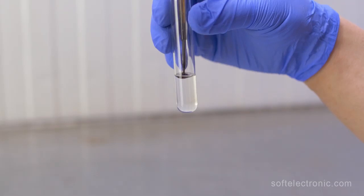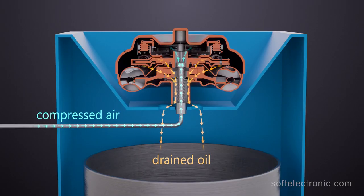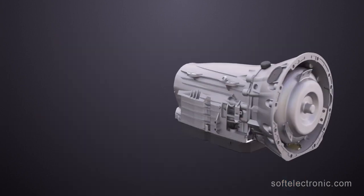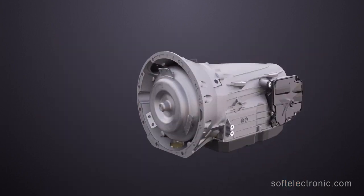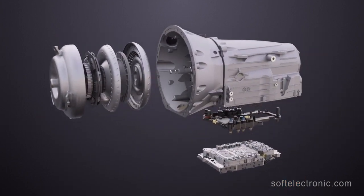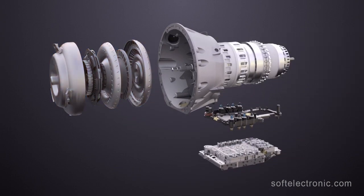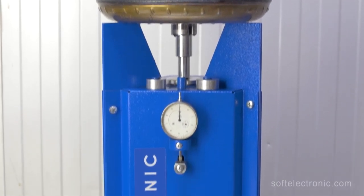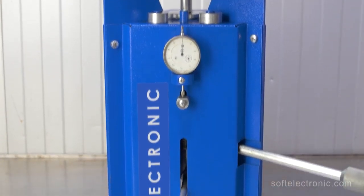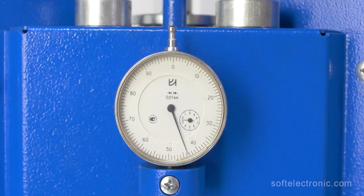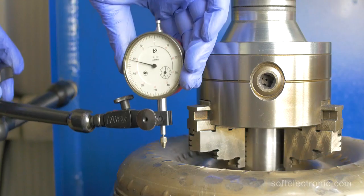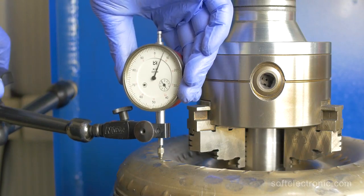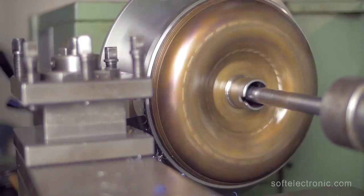A glycol test is performed, followed by oil drainage done by a specialized machine. If the test is positive, all parts of the gearbox must be disassembled and checked, as glycol has a fatal effect on the friction elements. Depending on the model, tension and gaps are measured, which can give an initial idea of how worn out the components are. It is also checked whether there is deviation in the balance and the axis of rotation.